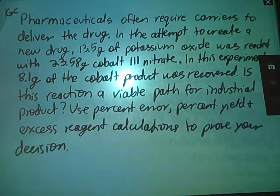In the attempt to create a new drug, 13.5 grams of potassium oxide was reacted with 23.58 grams cobalt-3 nitrate. So this is a stoic problem. I've got two masses, no solution stuff. This is just good old-fashioned stoic. In this experiment, 8.1 grams of the cobalt product was recovered. Is this reaction a viable path for industrial production? Use percent error, percent yield, and excess reagent calculations to prove your decision.